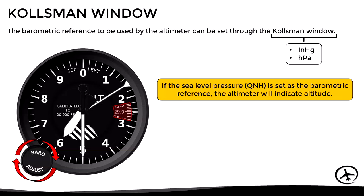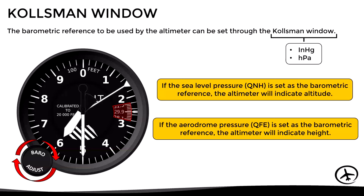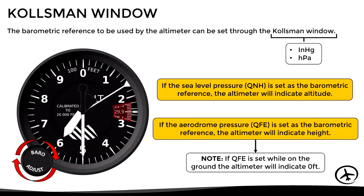To summarize: if we adjust the QNH as barometric reference, the altimeter will indicate the altitude above mean sea level. If we adjust the QFE as barometric reference, the altimeter will indicate the height above the airport. It is therefore logical that if we adjust the QFE of the airport while on the ground, the altimeter should indicate zero feet.